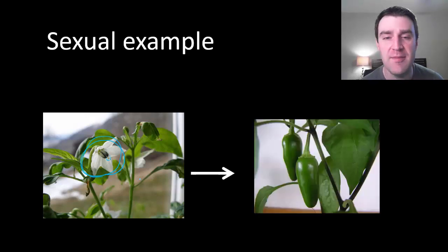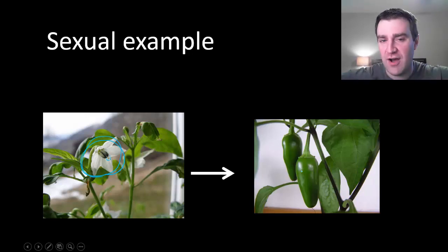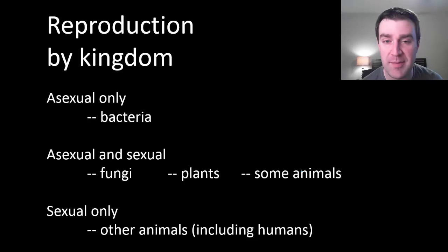And then we'll see later that maybe these same plants will take their offspring and put them inside of seeds and maybe surround the seeds with fruit as a way of getting their offspring far away so that they have a chance to grow. So we'll talk more about that later.